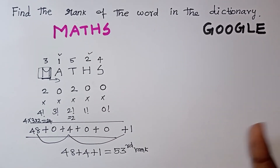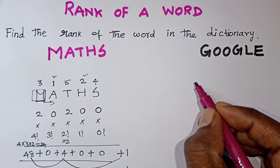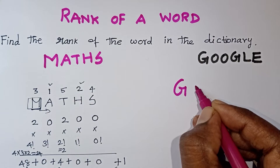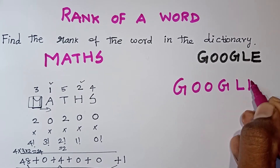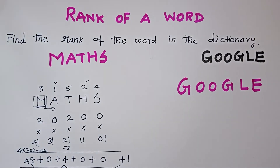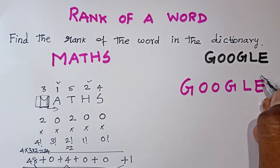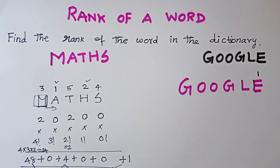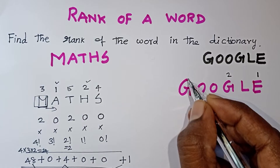Now, the question is: with repetition — where do we use it? If the word has repeated letters, we use this method. For the word GOOGLE — G, O, O, G, L, E — we find the first position in alphabetical order. A, B, C, D, E, F, G — so G is at position 2.